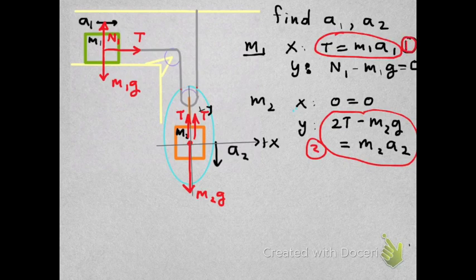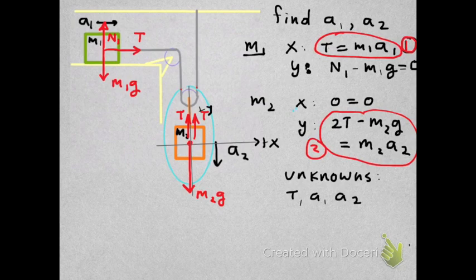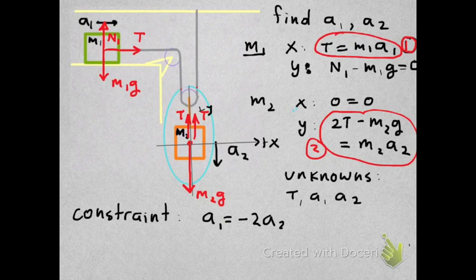So we have two equations so far. And how many unknowns do we have? Well, the tension is not known. We don't know the acceleration of block 1, and we don't know the acceleration of block 2. So we have more unknowns than equations. So we need to find an additional equation to be able to solve for these variables. The additional equation is clearly the constraint equation.